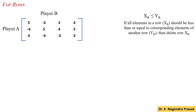For this, first we have to determine the row total for each row. For the first row, the row total is the summation of all elements in the first row: 5, minus 3, 3, and 4. So, the row total is 5 minus 3 plus 3 plus 4, which is 9.